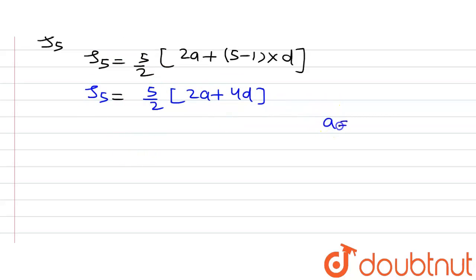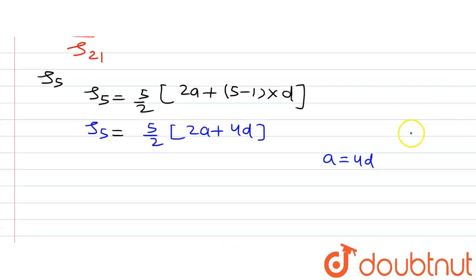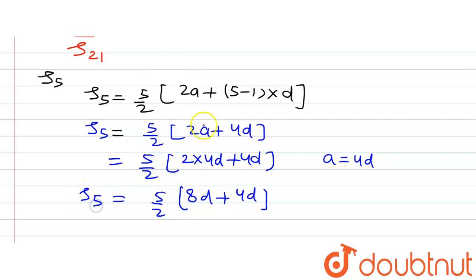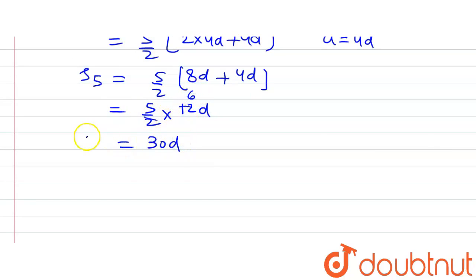From equation 1 we know that A = 4D. Substituting, we get S5 = 5/2 × (2 × 4D + 4D) = 5/2 × (8D + 4D) = 5/2 × 12D = 30D. So the sum of the first 5 terms is 30D.